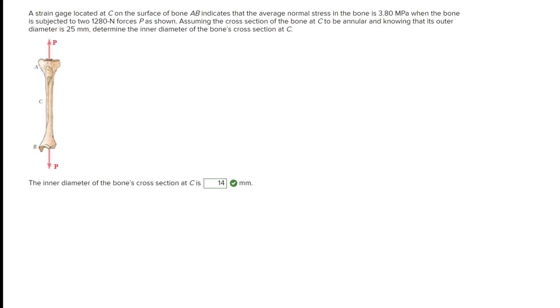For this problem we are given a normal stress in this bone and we are also given the two forces P acting on the bone. We are instructed to determine the inner diameter of the bone which is hollow. I'm going to go ahead and start by writing what's given, which is going to be our average stress of 3.80 megapascals. We're given the force P which is 1280 newtons, and we are also given the outer diameter which is 25 millimeters.